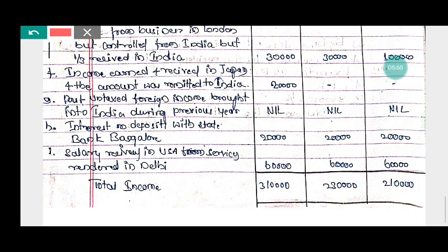Sixth point — income earned and received in Japan, and the amount was remitted to India. Here the income is generated in Japan and received in Japan, so it is foreign income. For an ordinary resident it is taxable — rupees 20,000. For not ordinary resident and non-resident, this foreign income is not taxable, so it is shown as a dash.